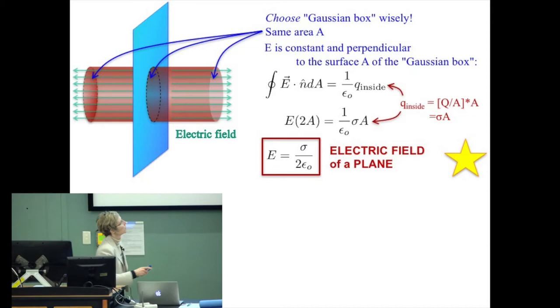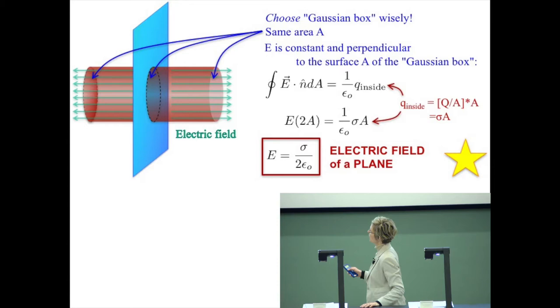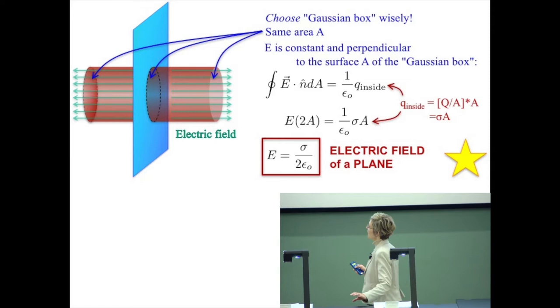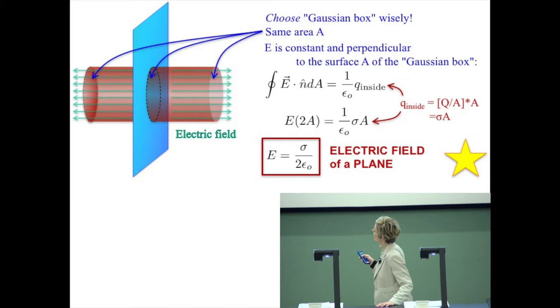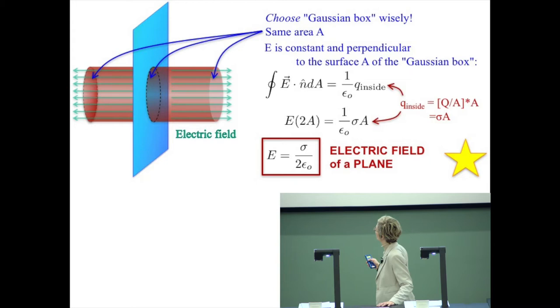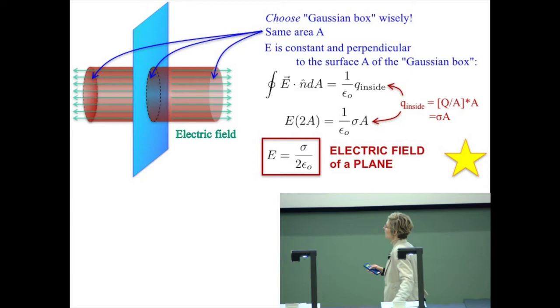Now what's the charge inside? There's always 1 over epsilon naught, and I need the charge inside. Going from surface charge density sigma (which is Q over A) to Q: multiply by A. So Q inside equals sigma times A, where A is the cross-sectional area of the cylinder. The A's cancel, and solving for the electric field gives E equals sigma over 2 epsilon naught - the electric field of a plane.